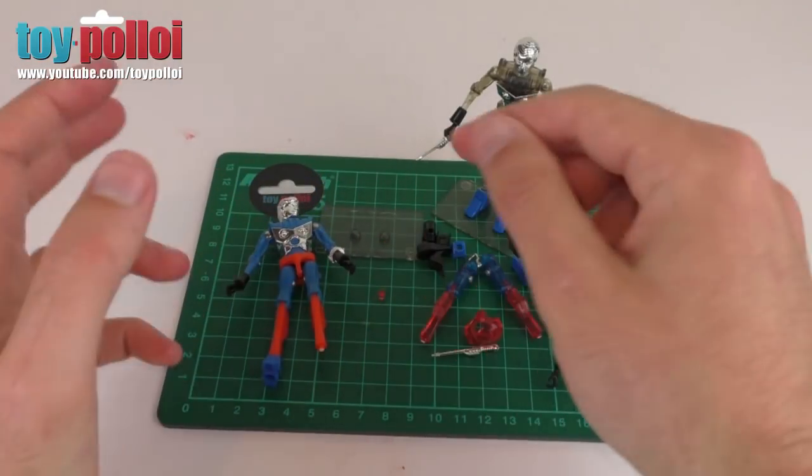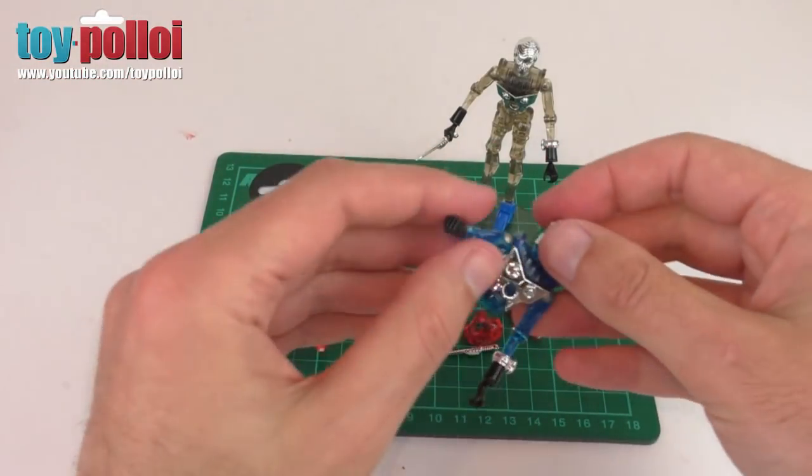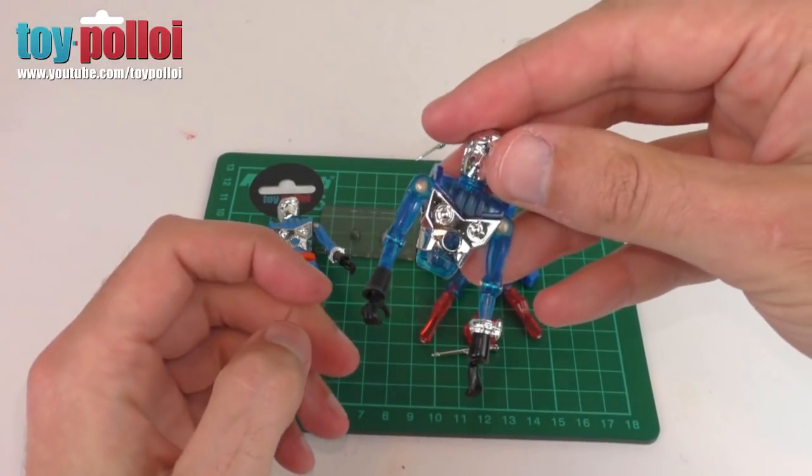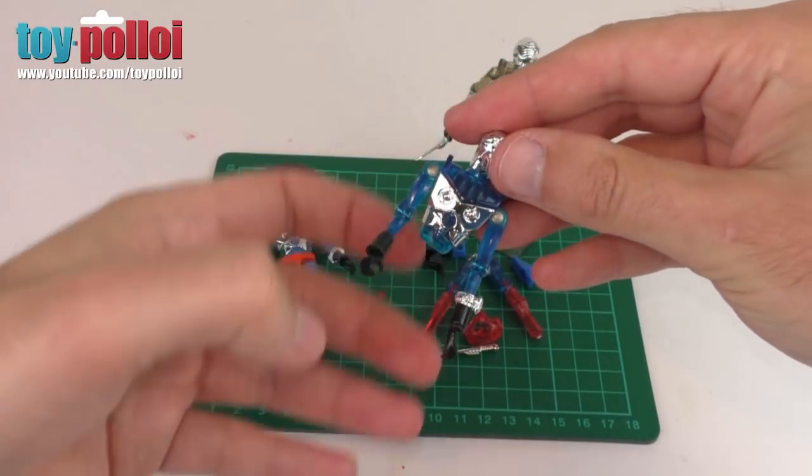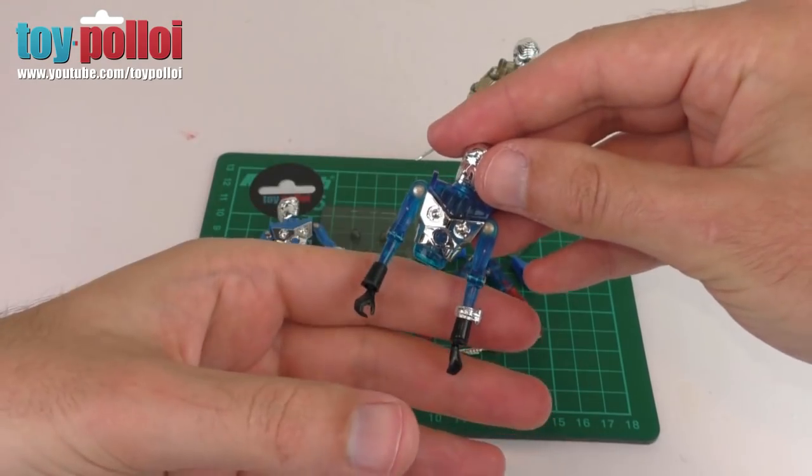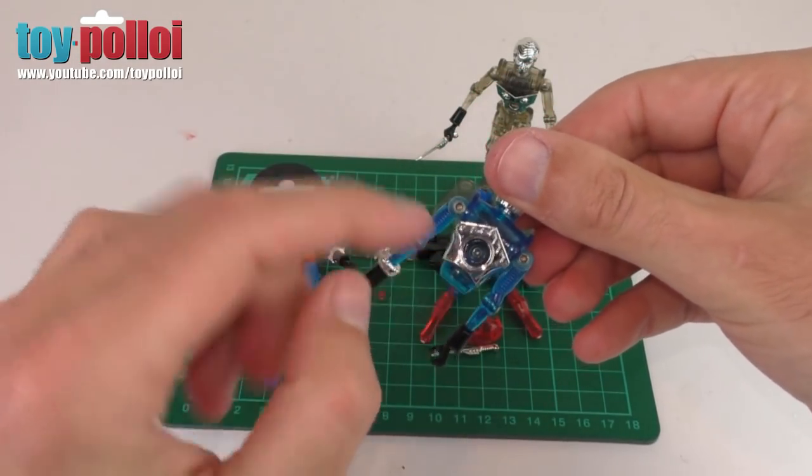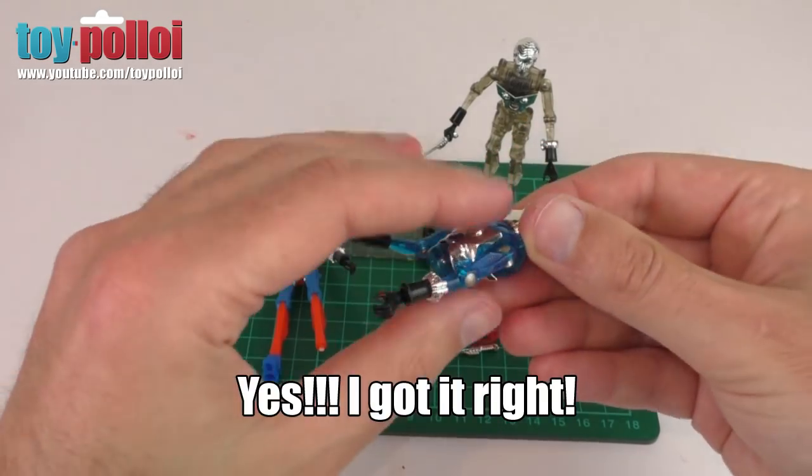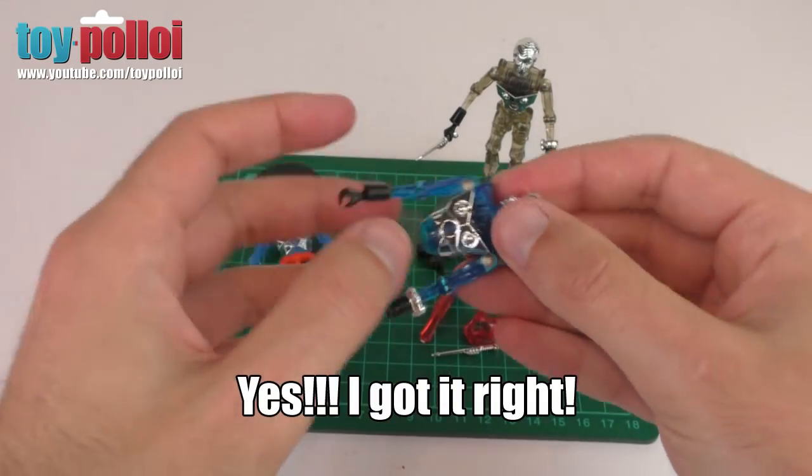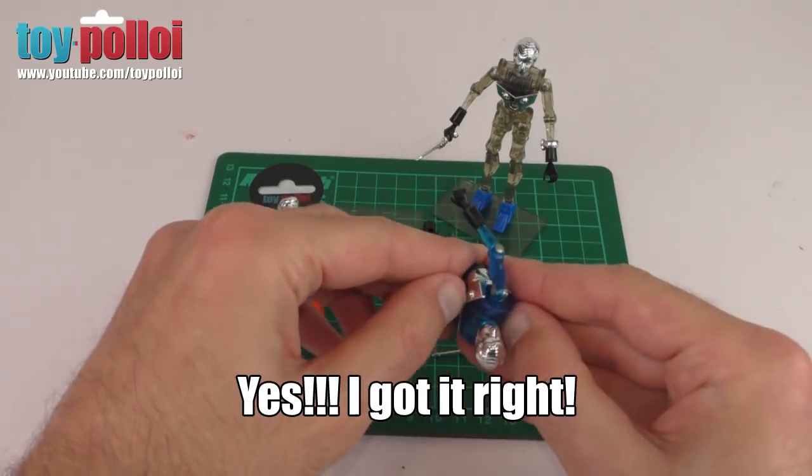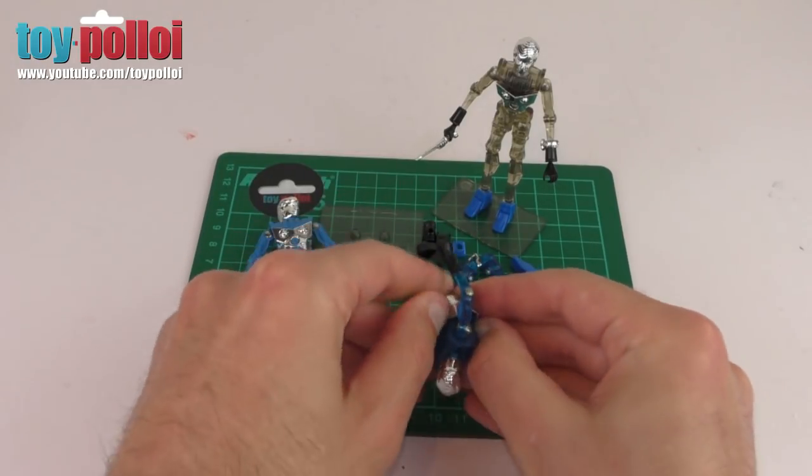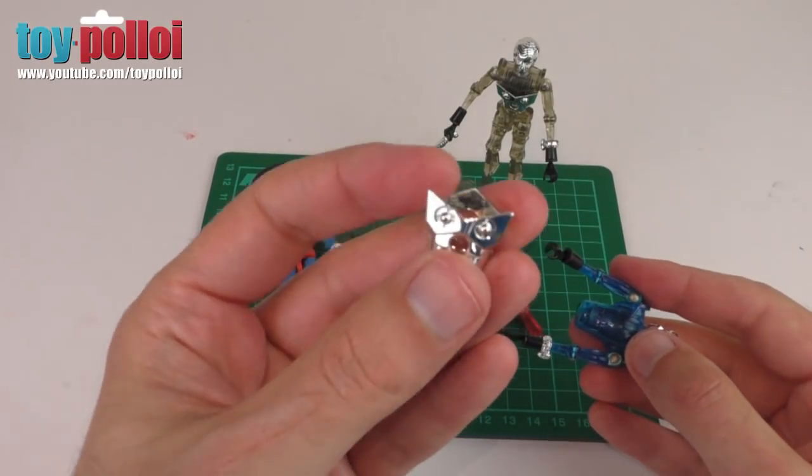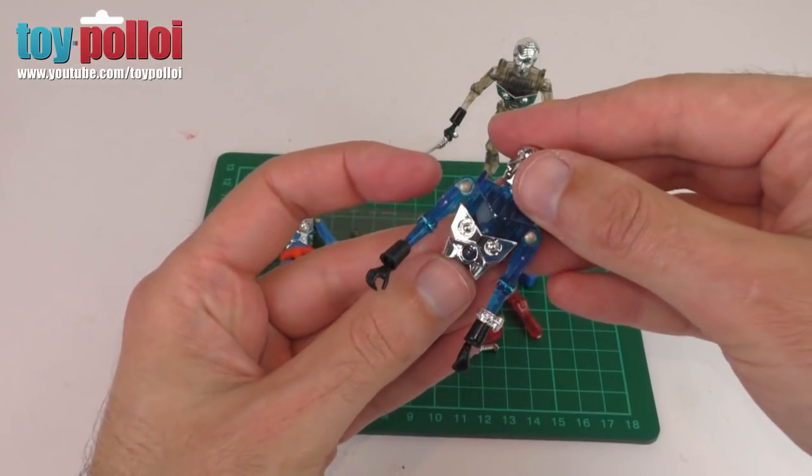But this toy also has another issue, which is one I've not fixed before. The main body section of the time traveler is held onto the bottom part using a little O ring. There's a screw on the back that you undo to get access to the O ring. But these spy magicians have an extra piece of plastic that goes over their upper torsos. If I carefully ping this chest piece off, you can see this silver piece pops over the top of the body.